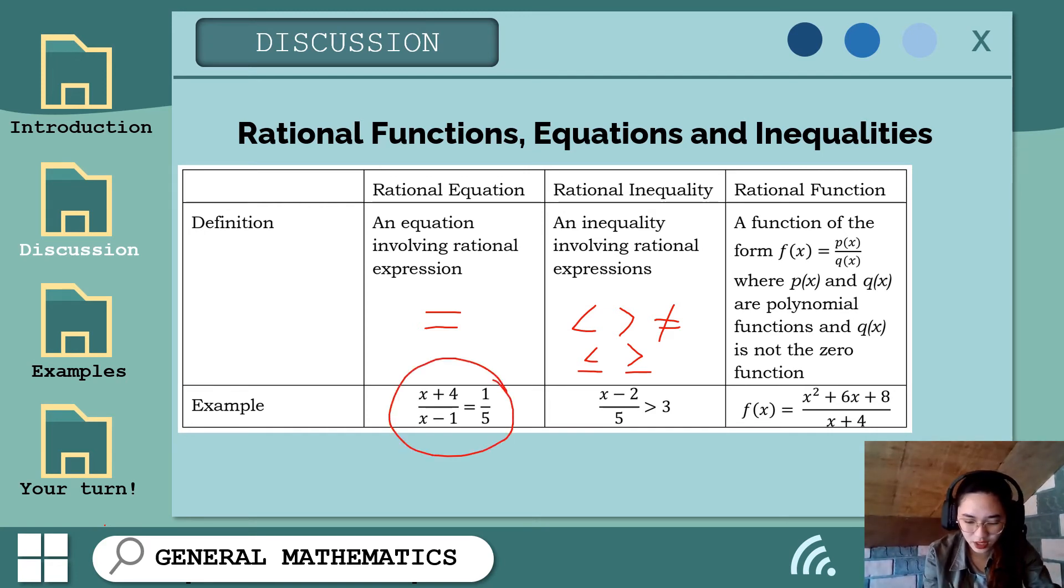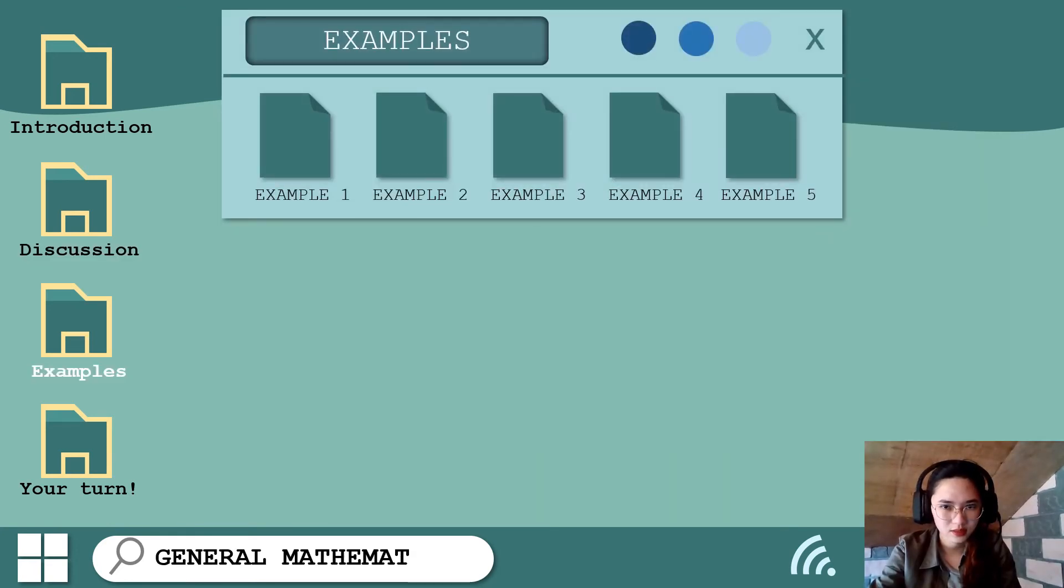Rational expression: we have here x plus 4 over x minus 1 is equal to 1/5. So yun, they involve expression that has equality symbol, so equation sya. While yun sa inequality naman, yan, nakikita nyo agad na merong inequality symbol, and of course it involves rational expression. Yan, x minus 8 over 5, so ito po ay rational inequality. At ganun din sa rational function. Yan, nakikita nyo, there is a relationship between our x and y. So automatic, dapat alam nyo ng rational function nyan. So yan, equal symbol din yung kanya kasama, so equation din sya actually, pero between y and x, kaya function po sya. Siyempre, let's have more examples of this rational equation, inequalities, and function.